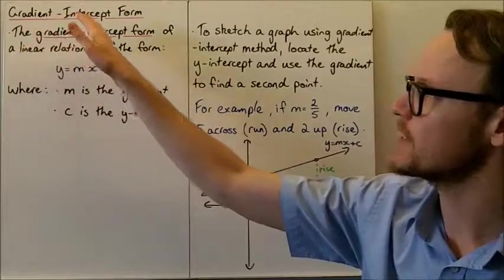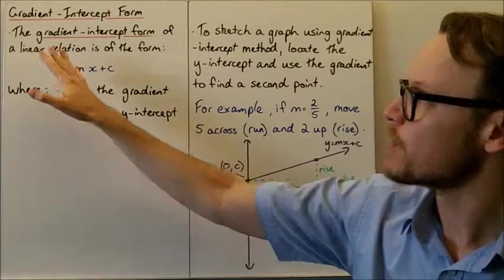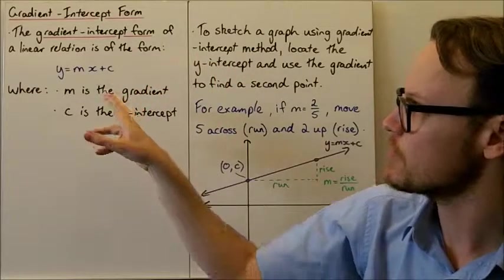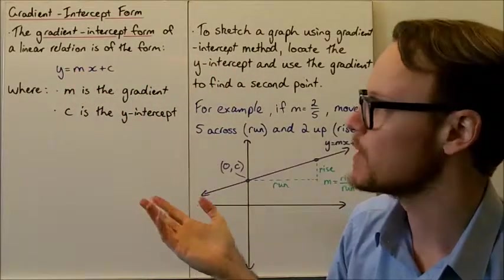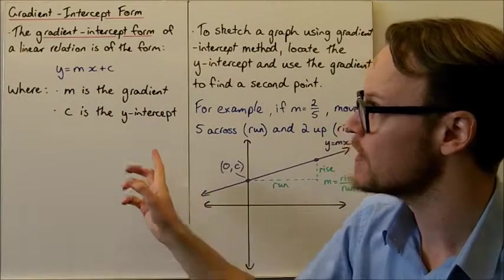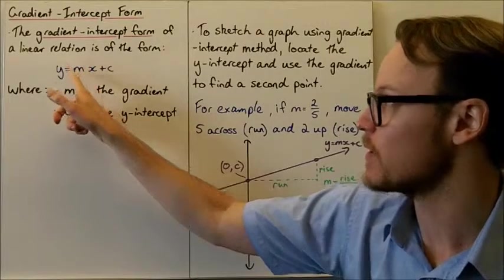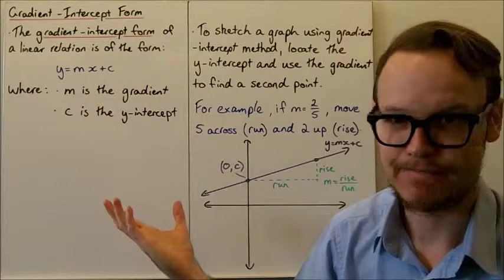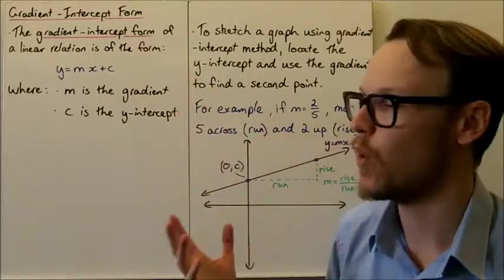Today we're going to look at gradient intercept form. The gradient intercept form of a linear relation is y equals mx plus c, which we've seen before. The m in y equals mx plus c is the gradient, and c is the y-intercept.